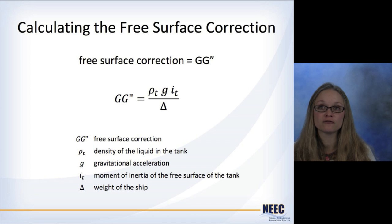So to calculate the free surface correction, we just need to calculate the distance from G to G double prime. To do that, it equals the density of the fluid in the tank times gravity times the moment of inertia of the free surface of the tank, and then divide all that by the weight of the ship.